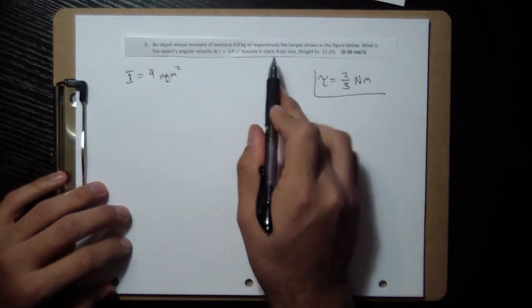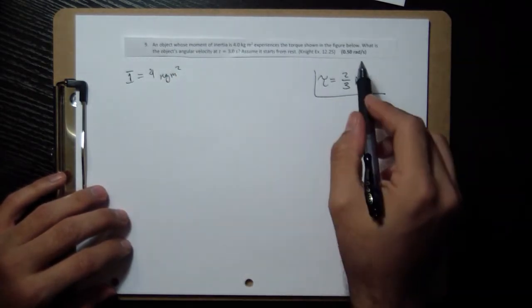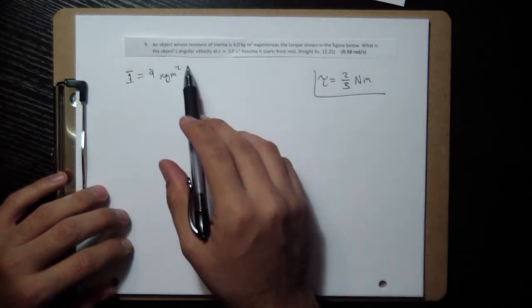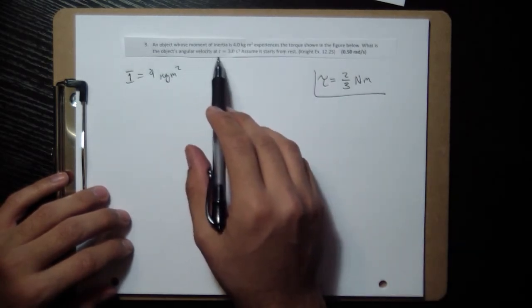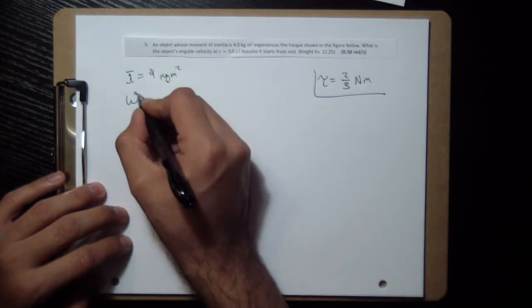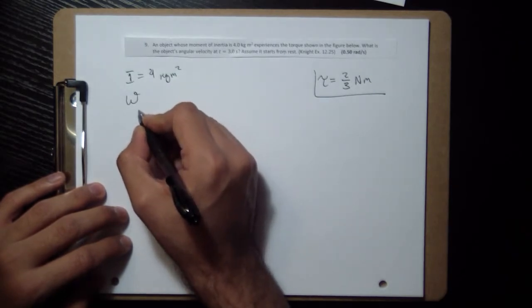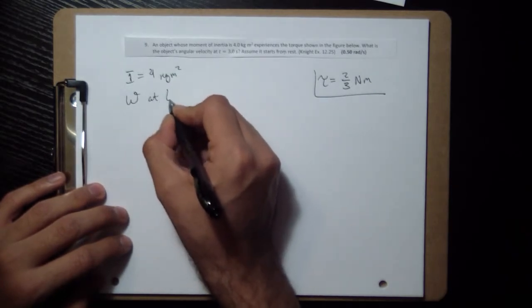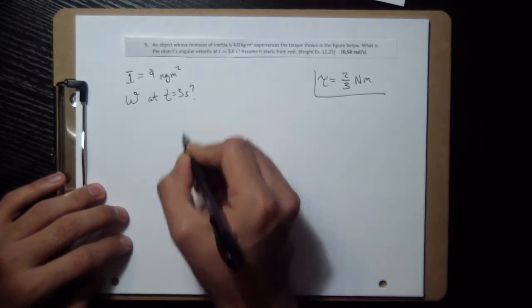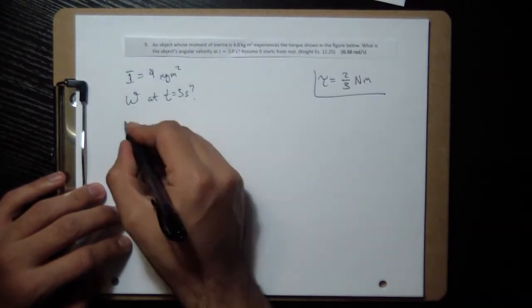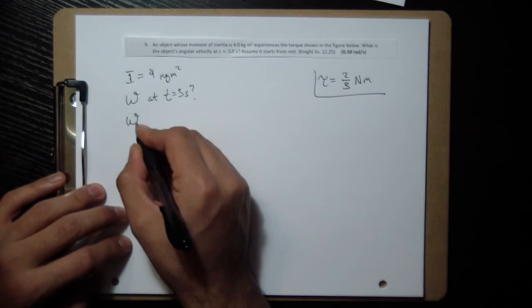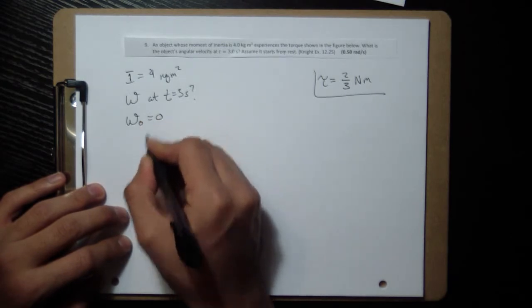And so this object experiences torque, and we want to know what its angular velocity is at 3 seconds. So angular velocity, we use omega, and we want to know what it is at time equal to 3 seconds. We're assuming it starts from rest, so the initial angular velocity is going to be 0.